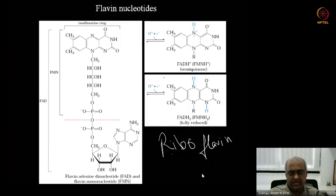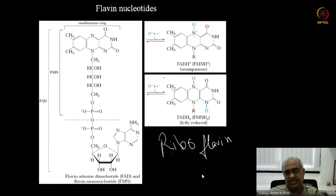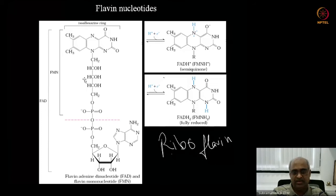Two primary things not to forget: flavin nucleotides can take or donate one electron at a time or two electrons in one go. Second, they are prosthetic groups — tightly bound. Their absorption spectra vary among the different forms — fully oxidized, partially oxidized (semiquinone), and fully reduced — and that is very useful in assaying the oxidation state.